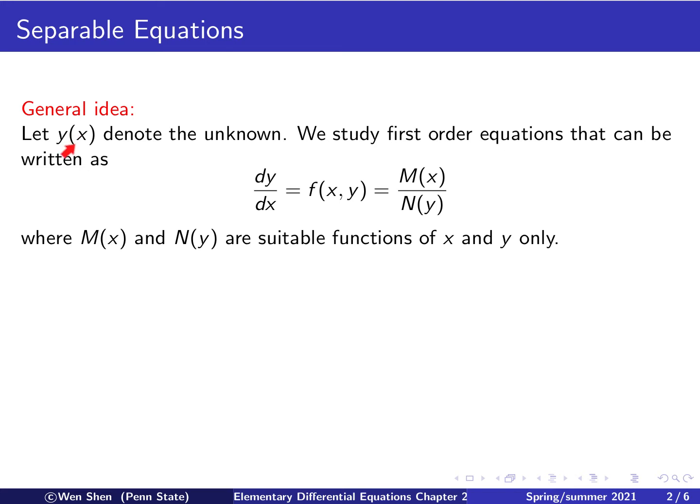Let's introduce the general idea. Let y of x be the unknown. Here we study the first order equation that can be written as dy over dx equals f of x and y. It depends on x and y, but it takes a particular form: I can write it as a fraction of a function M depending only on x over a function N depending only on y.